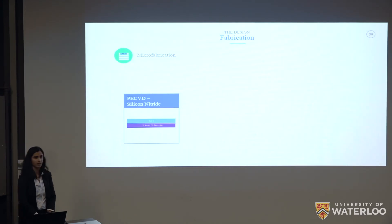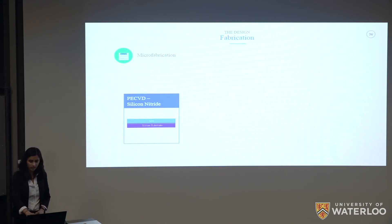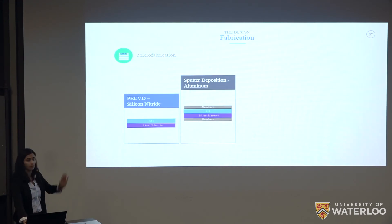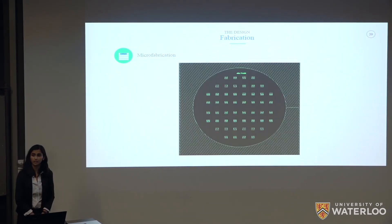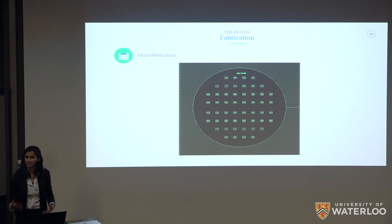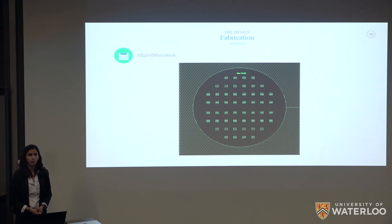For microfabrication, we started with an N-type silicon wafer, double-side polished since fabrication occurred on both sides. We deposited silicon nitride using plasma-enhanced chemical vapor deposition, followed by DC sputtering aluminum electrodes on the top and bottom surfaces. The aluminum on the top needed to be patterned into source and drain electrodes using photolithography with a photomask designed for a 3-inch wafer containing 52 devices. We chose 52 devices for redundancy. The channel length was 100 microns based on research, with the photomask also including designs ranging from 60 to 140 microns for second-generation testing.